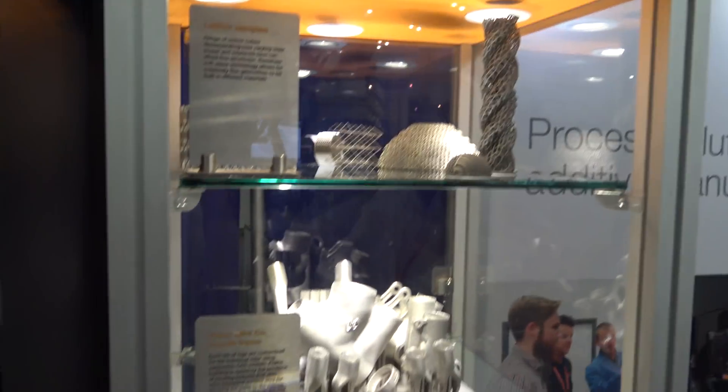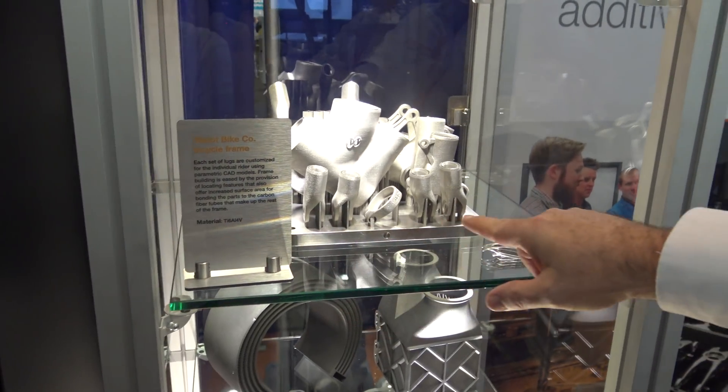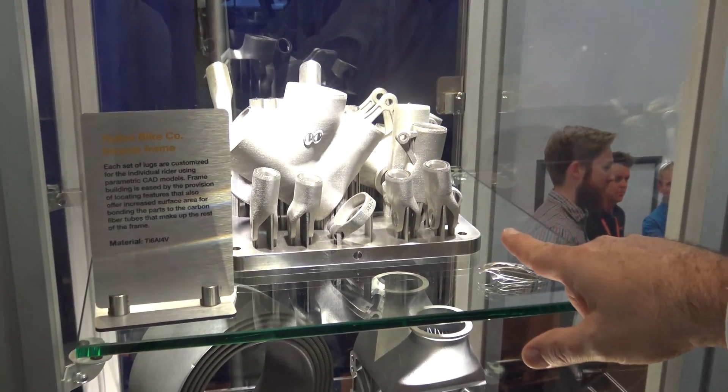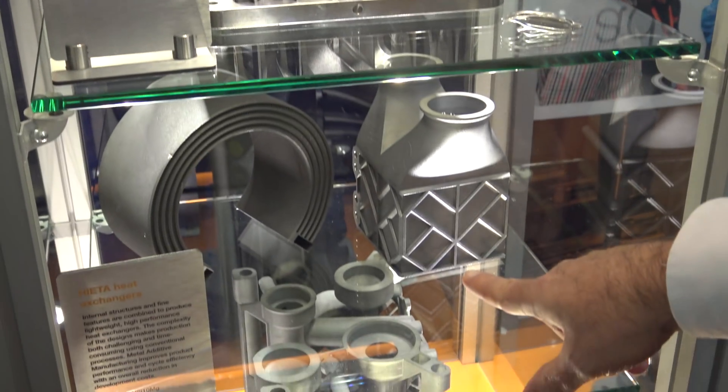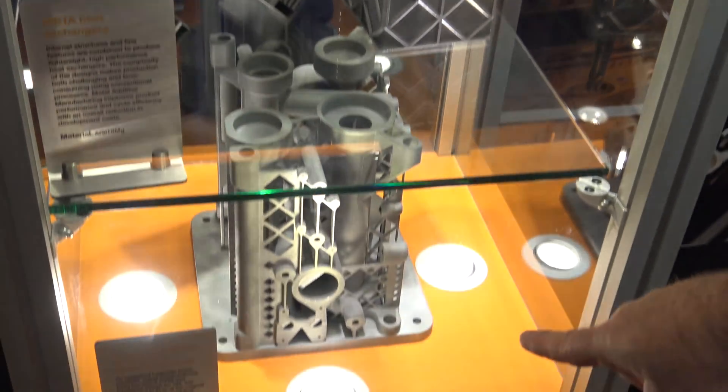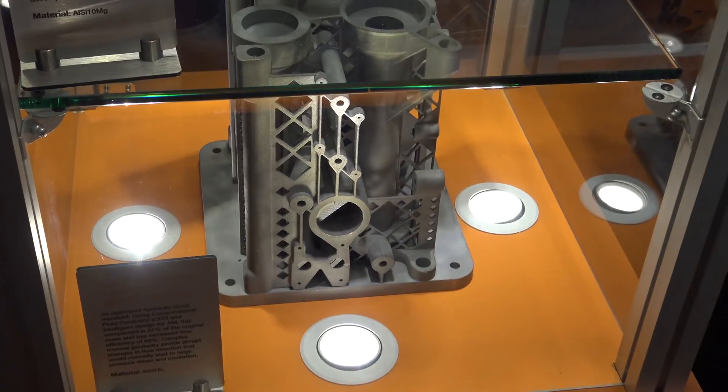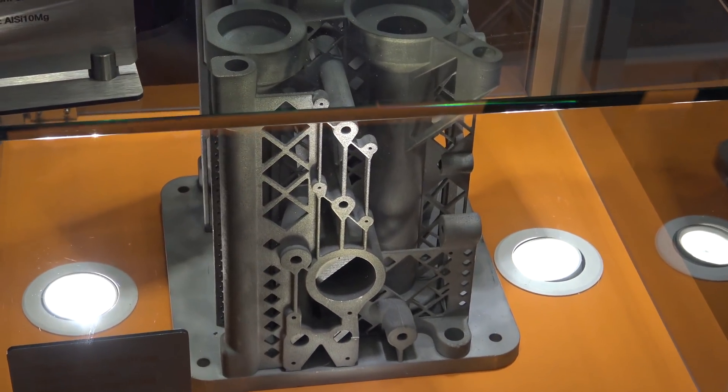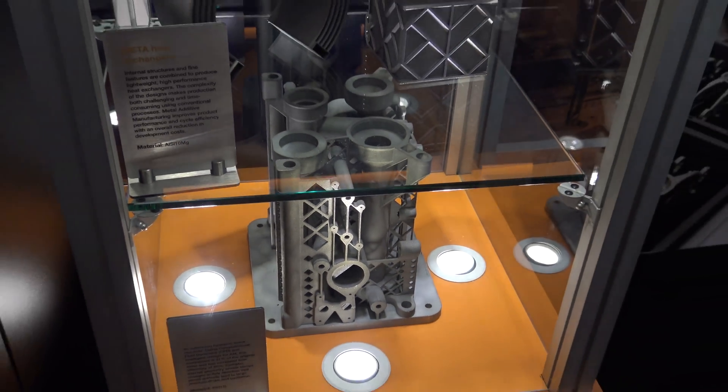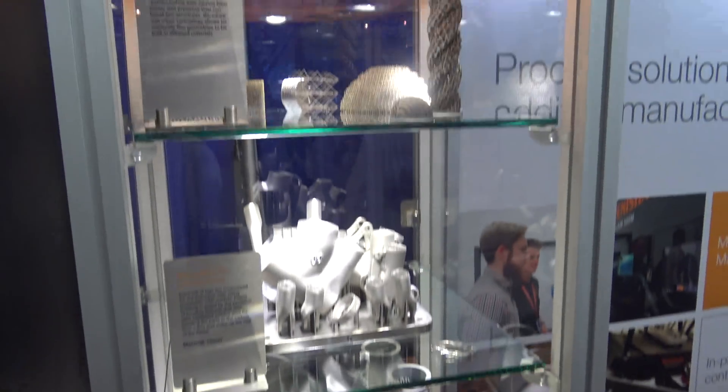What kind of metal do you have here? We've got material there, so this is Ti-64, that's titanium. We got aluminum there, nickel, stainless, but we also work with things like Inconel and cobalt chrome.